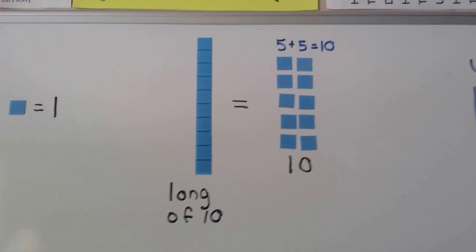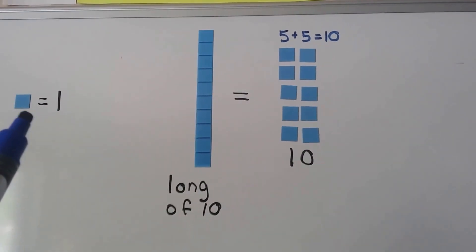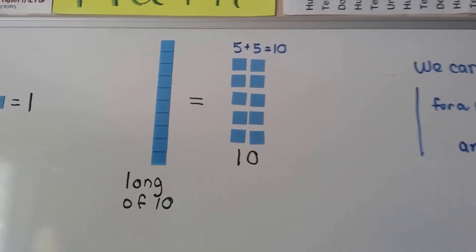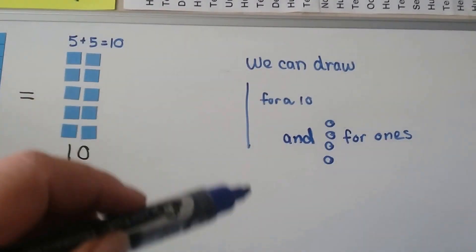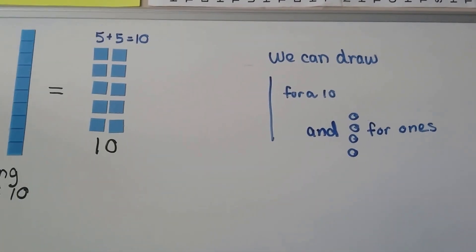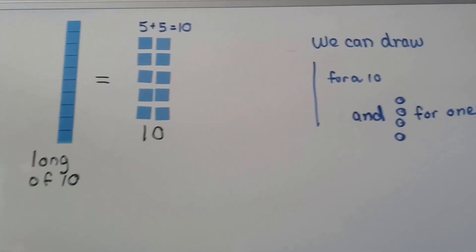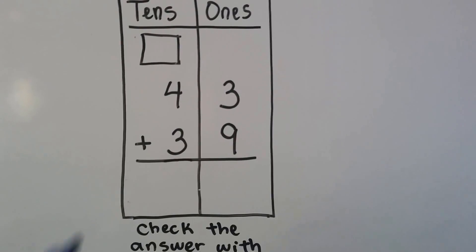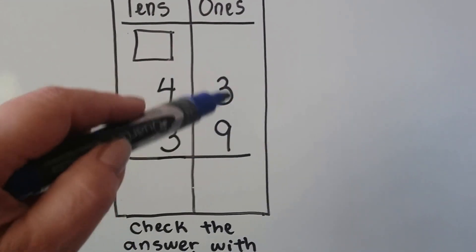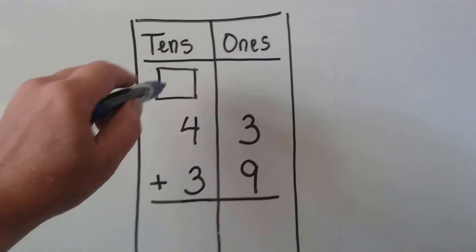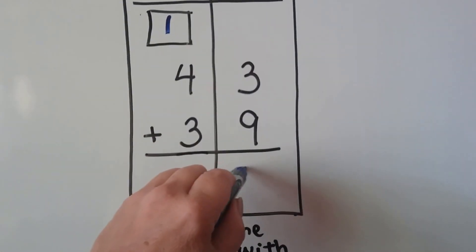Now, we've been using these longs of 10 and the single units for a 1. We know 10 of them makes a long. Well, we can also draw a long line for a 10 and little circles for ones. We don't need to have these physical models. So if we want to add 43 plus 39, we start in the ones place: 9, add 3 — 9, 10, 11, 12. A 12 is 1 ten and 2 ones.